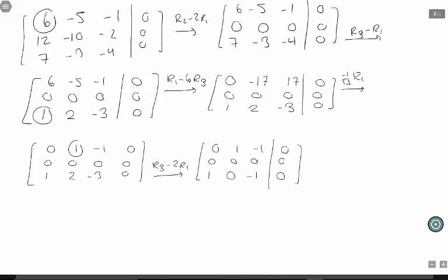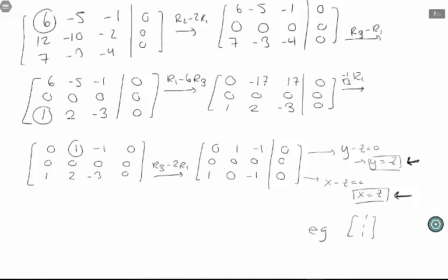Now I can pivot around that one. The top tells us that y minus z is equal to 0, so y has to equal z. The bottom row tells us x minus z has to be 0, so x has to be z. So our solutions look like anything where x, y, and z are the same. For example, I could take 1, 1, 1. Just be sure you don't use 0, 0, 0, because that one is not an eigenvector.